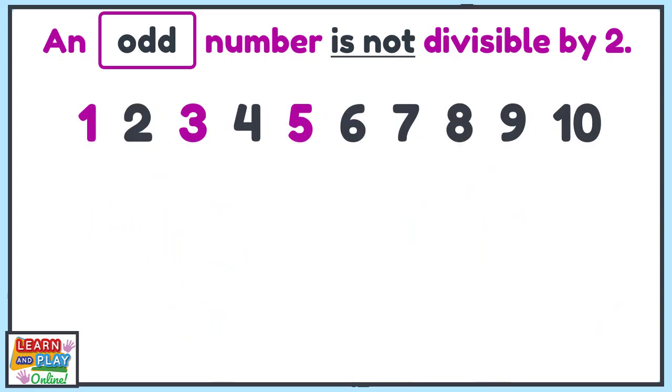So far, we know that the numbers 1, 3 and 5 are odd numbers. What pattern can you see here? If you know the pattern, you will know the other odd numbers as well.